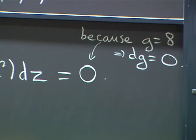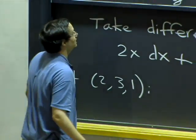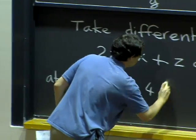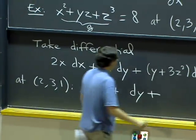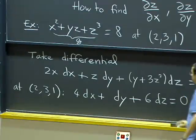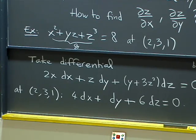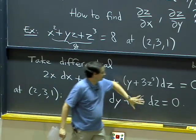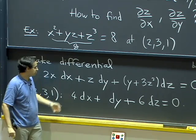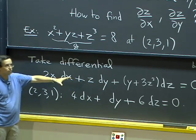So now let's just plug in some values at this point. That tells us: if x equals 2, that's 4 dx, plus z is 1 so dy, plus y plus 3z squared — that should be 6 dz — equals zero. This equation tells us about a relation between the changes in x, y, and z near that point. It tells us how, if you change x and y, z will change. You can move dz to that side and express dz in terms of dx and dy, or move dy to express dy in terms of dx and dz. It tells you at the level of the derivatives how each variable depends on the two others.